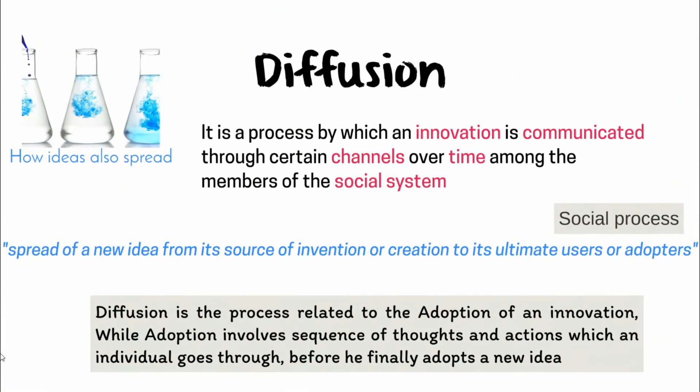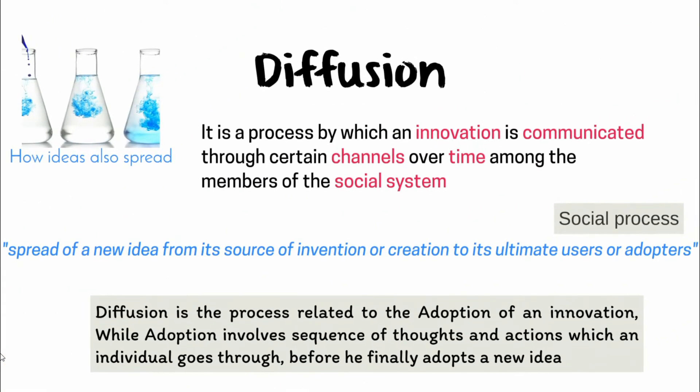Let us see how that particular innovation is spread among society. The process of spreading of any idea we can call diffusion. It is a process by which an innovation is communicated through certain channels over time among the members of a social system. So diffusion is a social process.